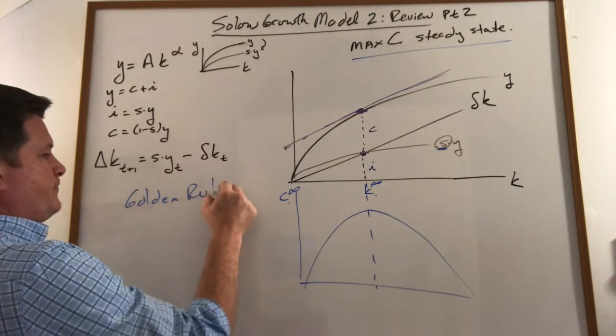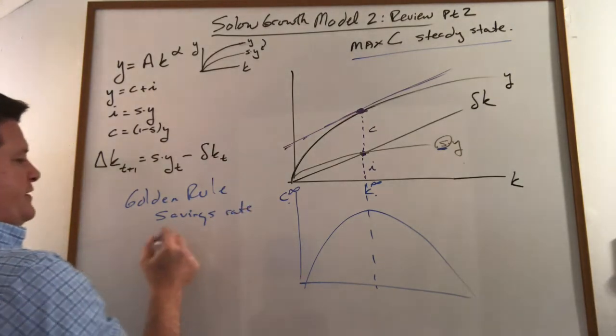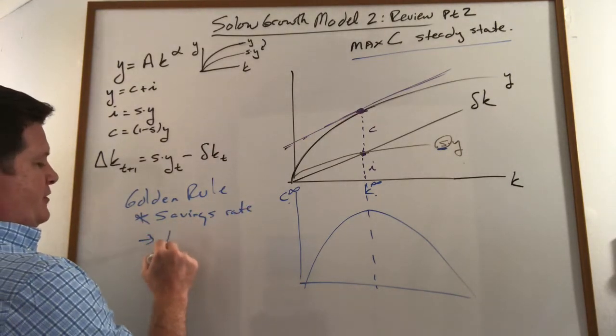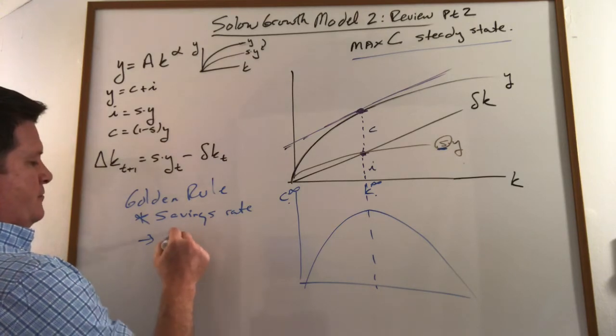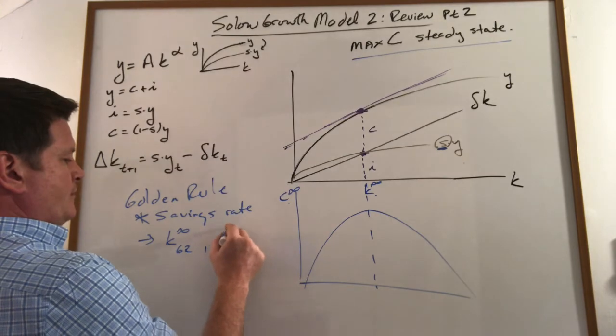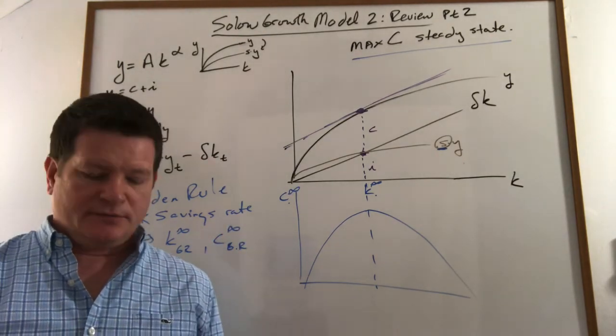It is called the golden rule savings rate, which is really the key. And that determines my golden rule capital and my golden rule consumption. I like to call it max consumption steady state.